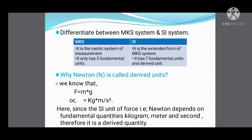To differentiate MKS and SI: MKS is the metric system of measurement, while SI is the extended form of MKS. MKS has only three fundamental units, whereas SI has seven fundamental units plus derived units. A commonly asked question is: why is Newton called a derived unit? We know F = M × G, where M is mass and G is acceleration due to gravity. The SI unit of mass is kilogram and of acceleration is meter per second squared. Since Newton depends on the fundamental units kilogram, meter, and second, it is a derived unit.